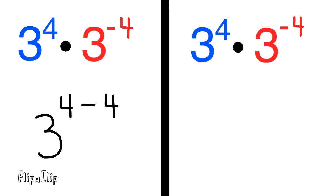In this case, we're adding a negative 4, so 4 minus 4, that's 0. 3 to the power of 0, and that's equal to 1.